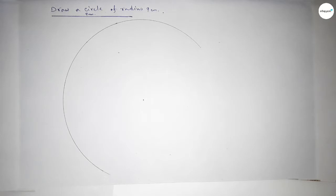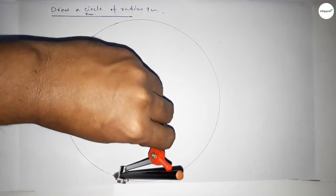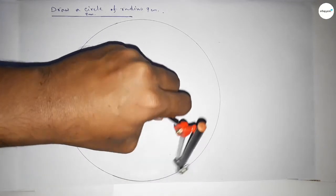And so again with same length and putting the compass here and continue to draw the arc. So this represents a circle and this is a perfect picture.